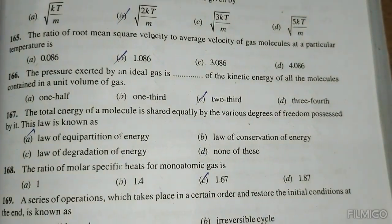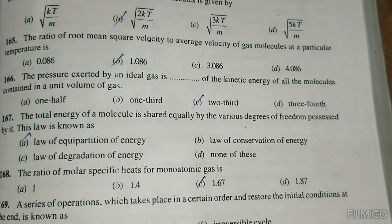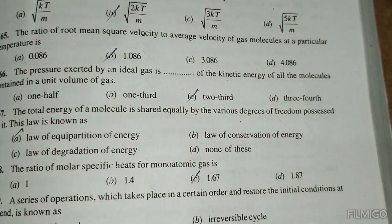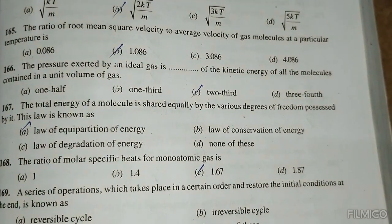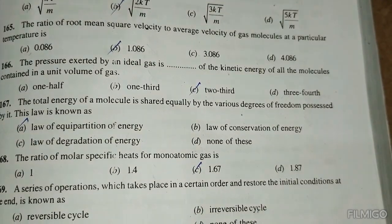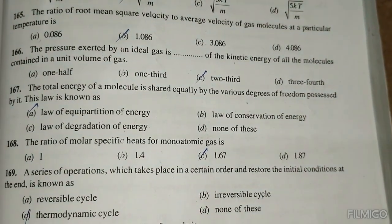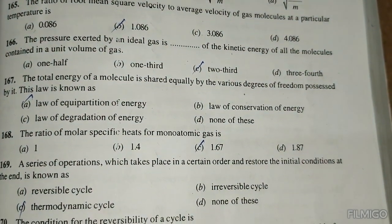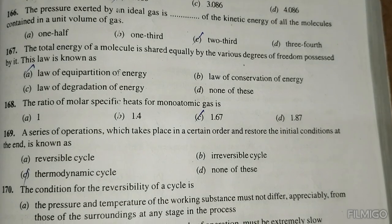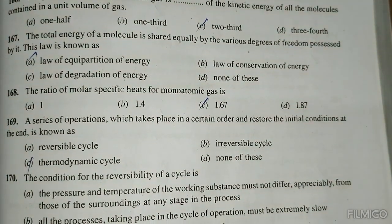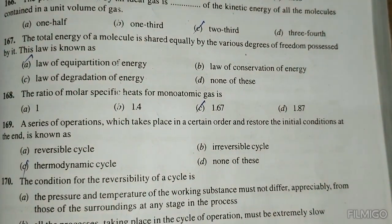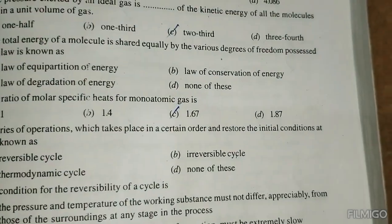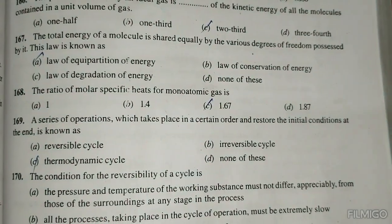The total energy of molecules is shared equally by various degrees of freedom — this is known as the law of equipartition of energy. The ratio of molar specific heat for a monoatomic gas is 1.67. A series of operations which takes place in a certain order and restores the initial condition at the end is known as a thermodynamic cycle.